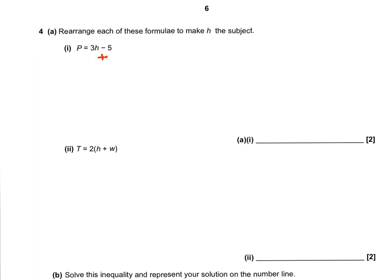So the first thing that's stopping h from being on its own here is this minus 5. So to get rid of it, we're going to add 5 to both sides. That now leaves us with p plus 5 on the left, and on the right-hand side, just 3h.